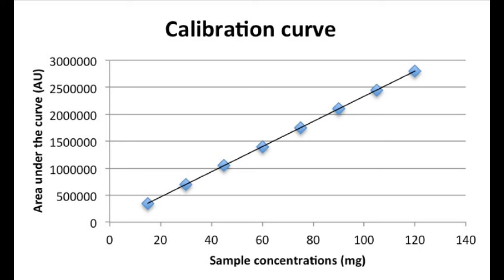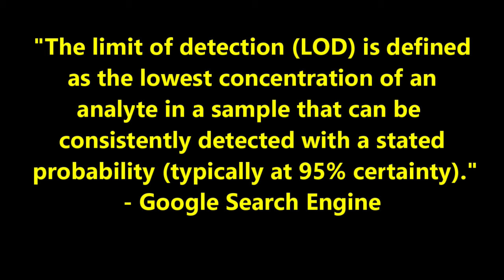Yet another very important thing to consider is that the concentration of the analyte must fall within two specific ranges called the limit of detection and the limits of quantitization. I always have a hard time saying that word. I hate that word. We're just going to call these the LOD and the LOQs. The limit of detection is essentially what it sounds like. It is the limit established by experimentation that the instrument can reliably detect a particular analyte. If we want to get technical about it, we can use Google's succinct definition, which is the lowest concentration of an analyte in a sample that can be consistently detected within a stated probability, typically at 95% certainty.